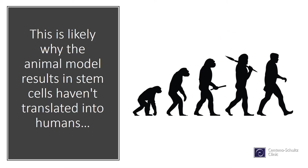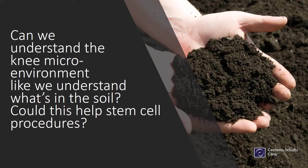This is likely why animal model results in stem cells haven't translated well into humans. One of the ways to possibly fix this would be trying to control for the soil, because we may have a difference in the soil between an animal and a human — meaning that in a human we might have vastly different issues going on inside the knee with inflammation.